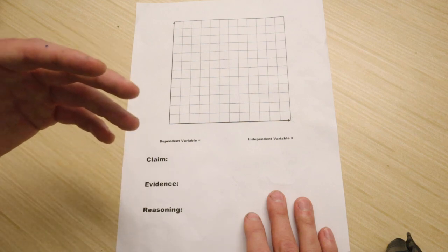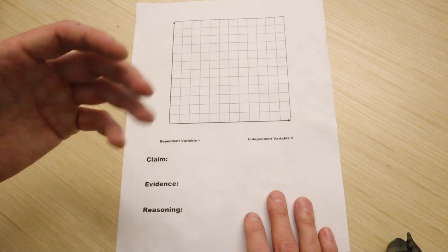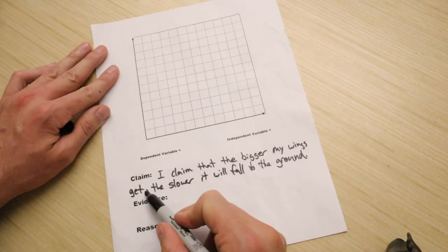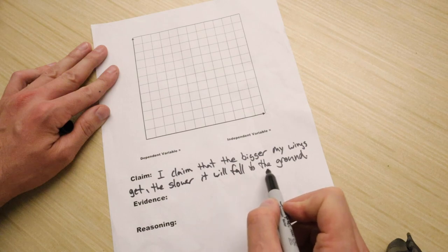So once we've collected all of our data, we're going to see if the data supports our claim. We're going to write about it in evidence. Then we'll further explain our reasoning why the data shows that, hey, this is what's happening. This supports my claim. I was correct or I was incorrect. So I claim that the bigger my wings get, the slower it will fall to the ground.